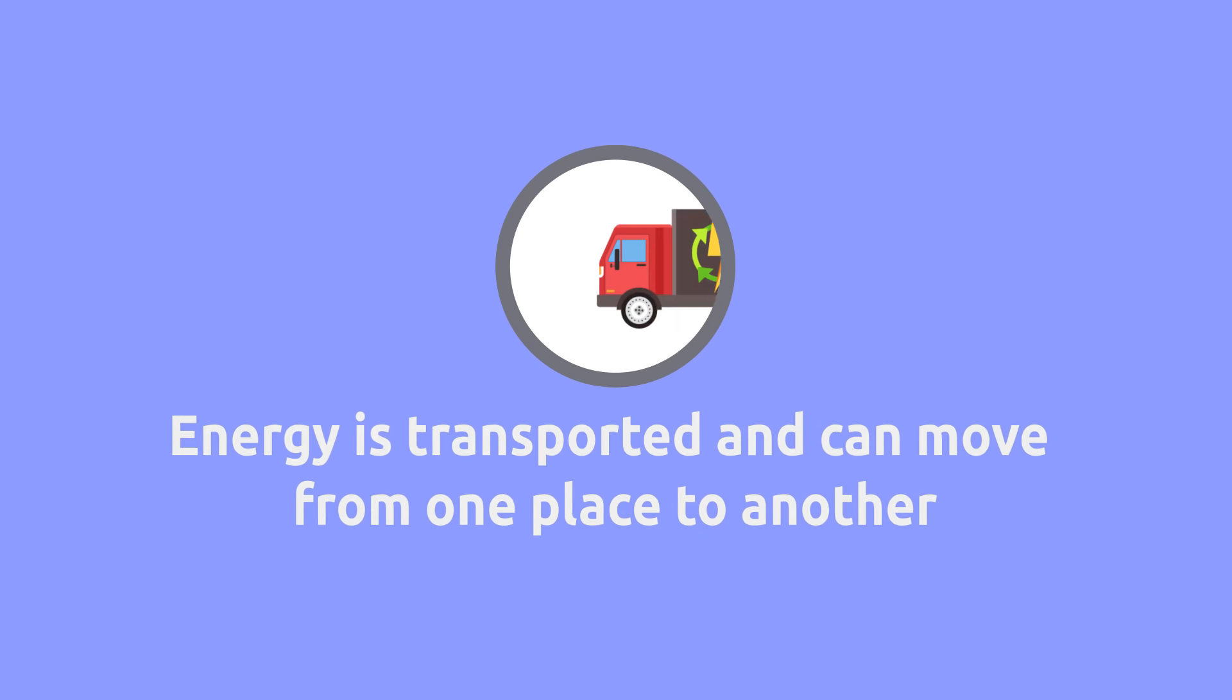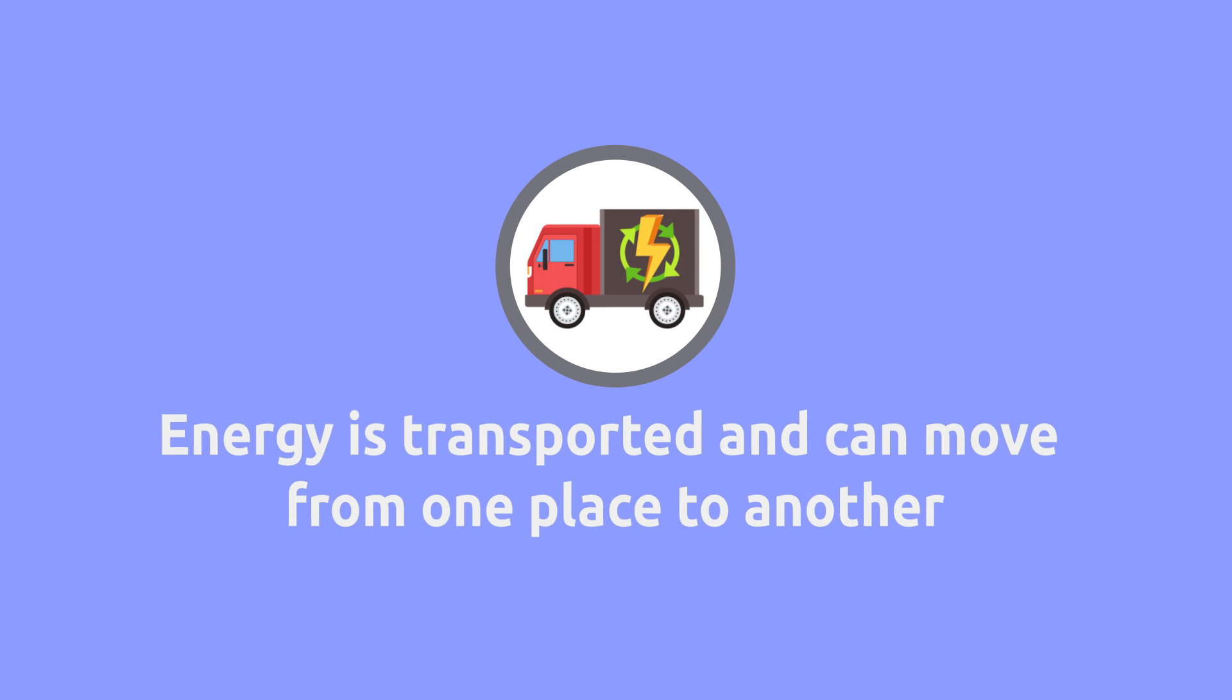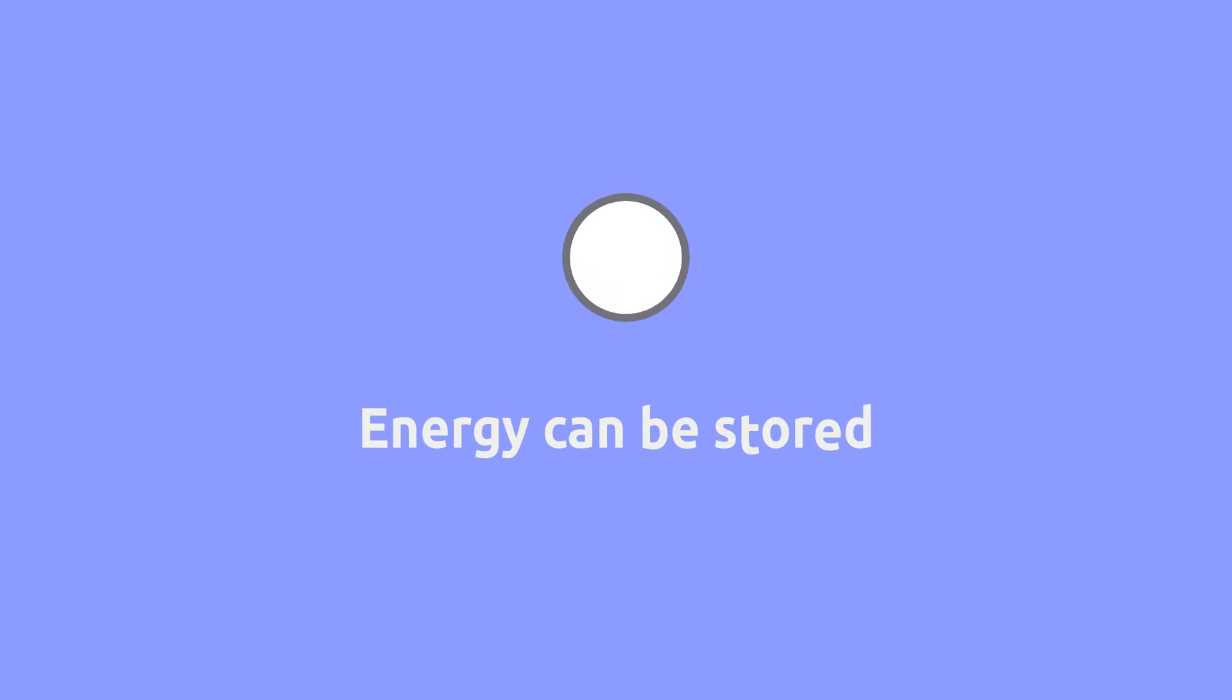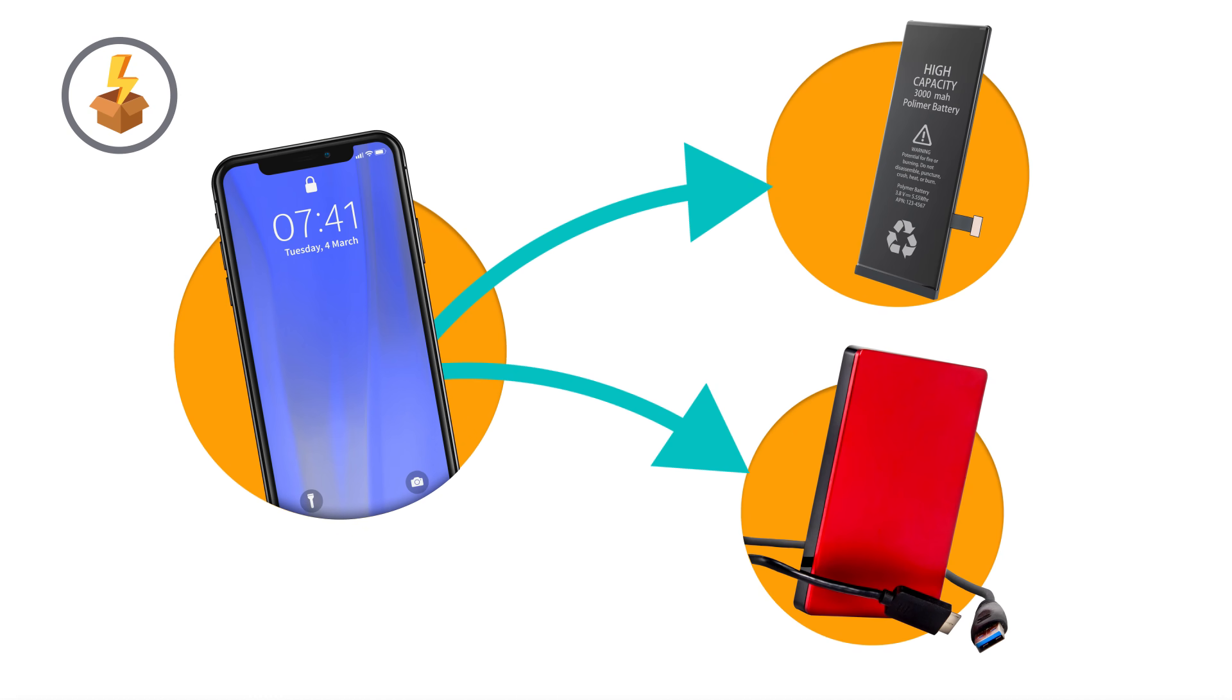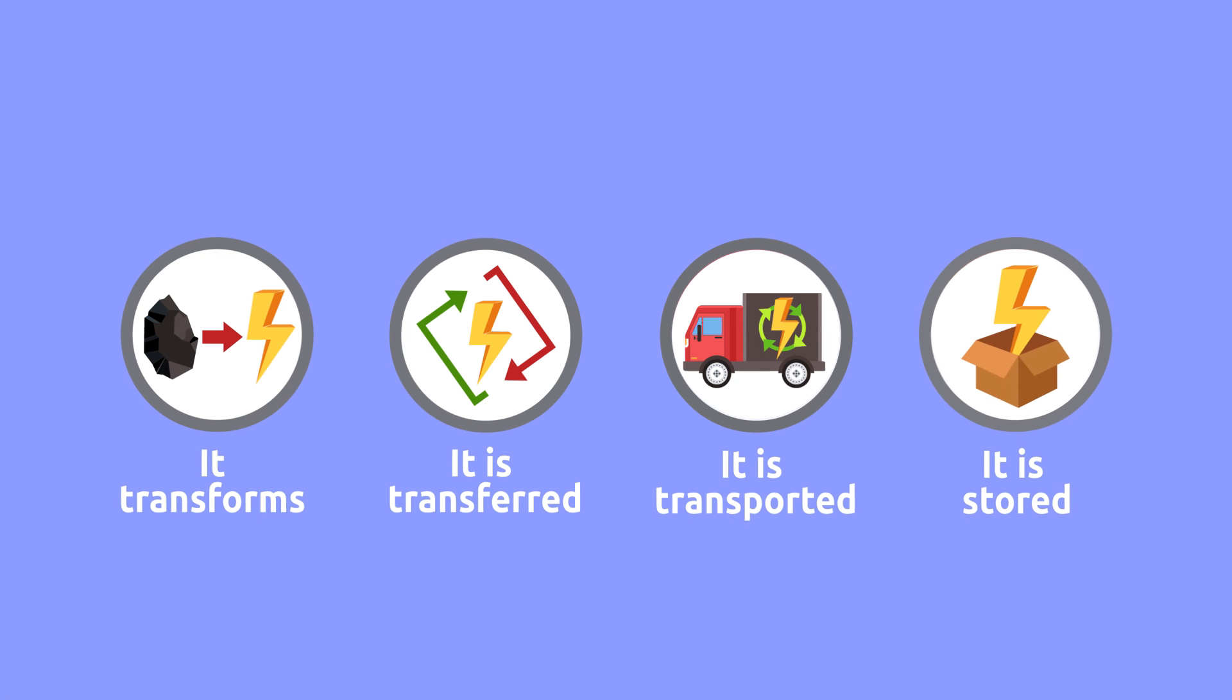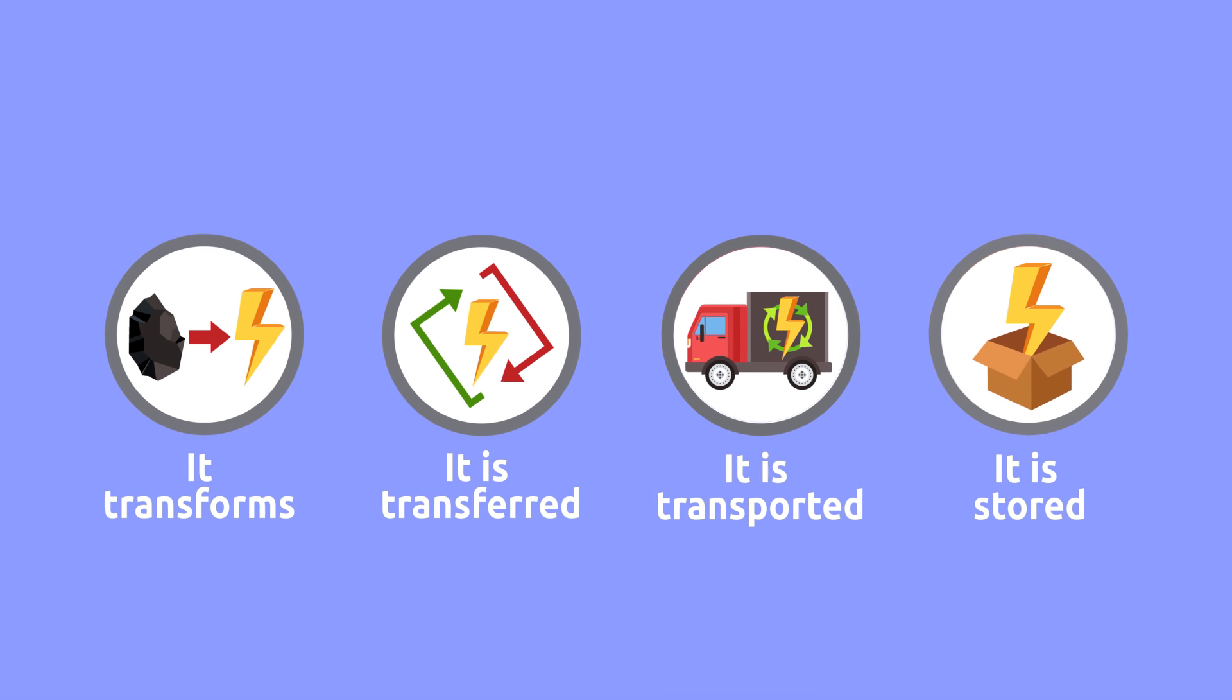Energy is transported and can move from one place to another. This way, energy travels through electric cables and reaches our houses. Energy can be stored. For example, mobile phone batteries are used for storing energy. Let's recap: energy transforms, is transferred, and can also be transported and stored.